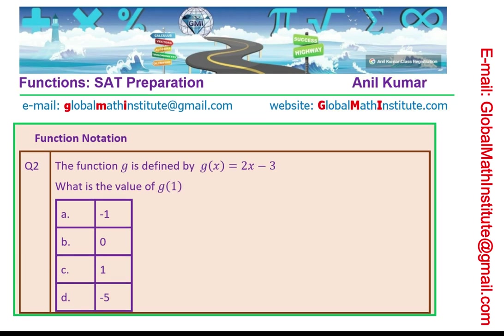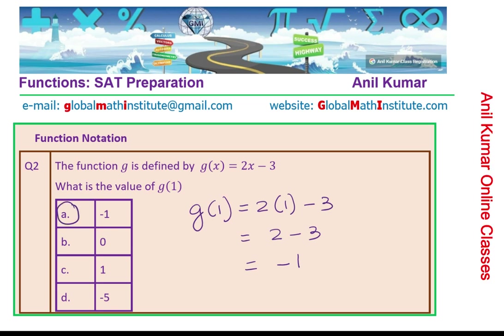Here is the second question. The function g is defined by g of x equals 2x minus 3. What is the value of g of 1? We substitute x as 1: we get 2 times 1 minus 3, which is 2 minus 3, or minus 1. So option A is the correct option.